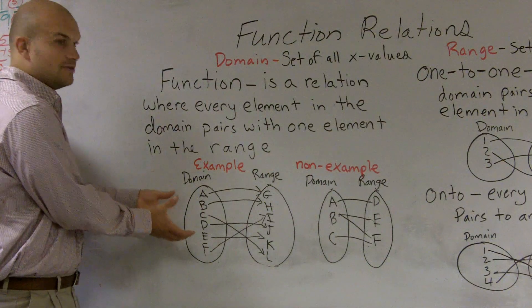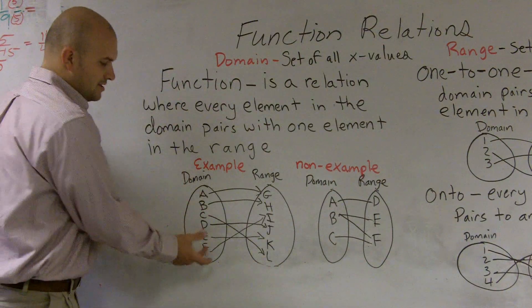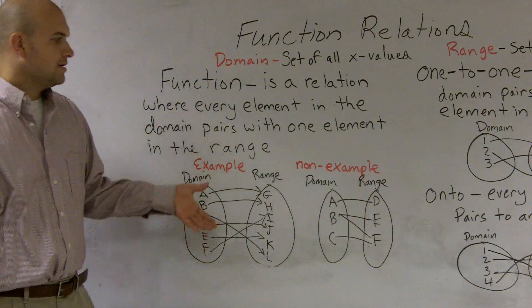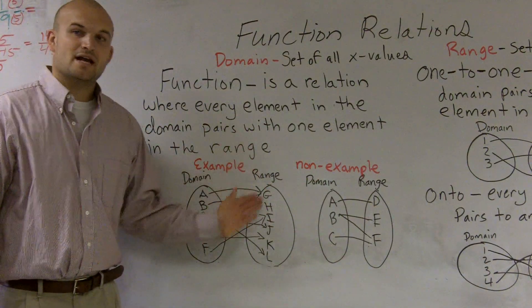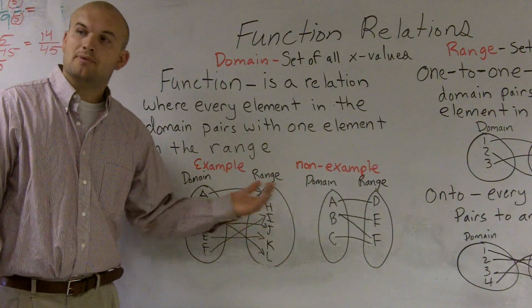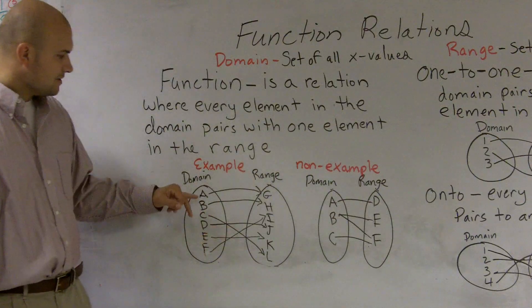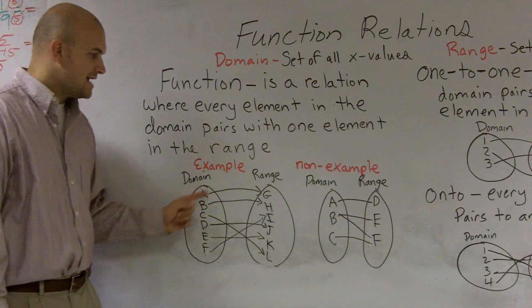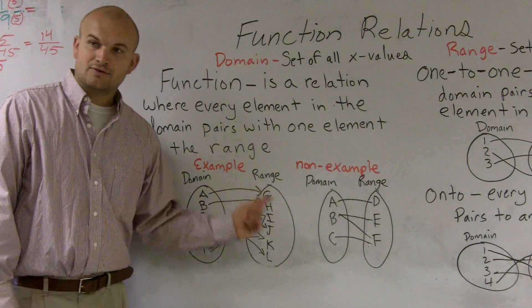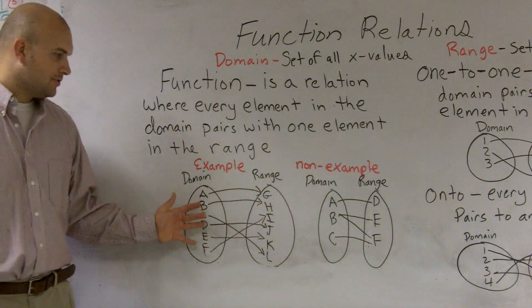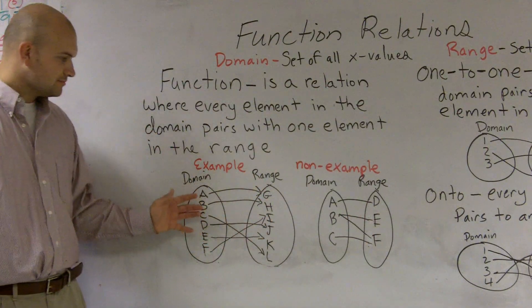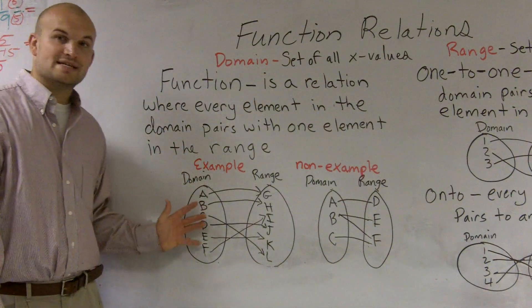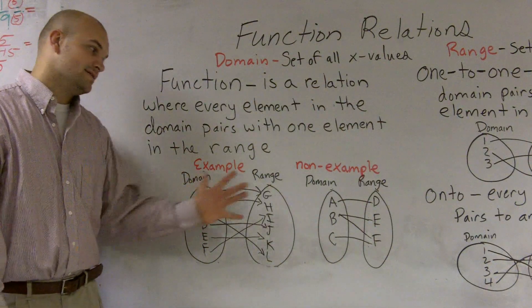So the domain is the set of all your x values — let's pretend this circle represents all my x values. The range is going to be my set of all my y values, also my output in a function. For it to be a function, everything in the domain has to go to one element in the range. Here's an example of a function where every element in the domain goes to exactly one element in the range.